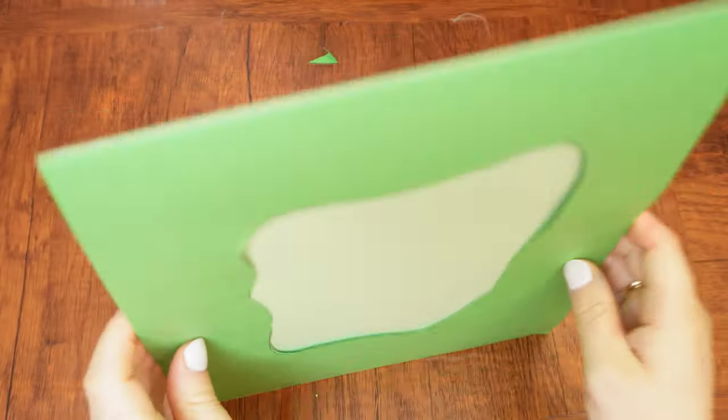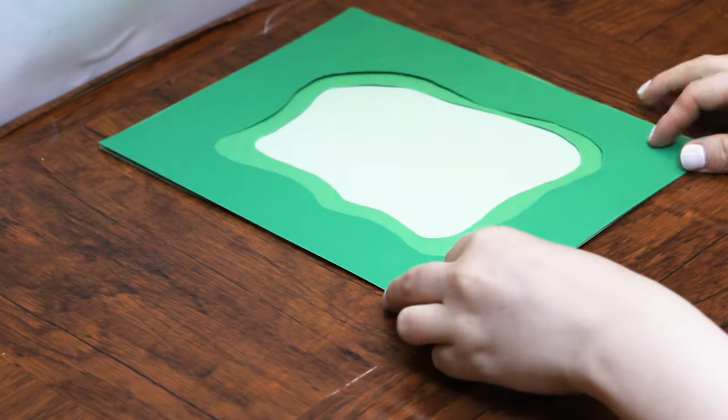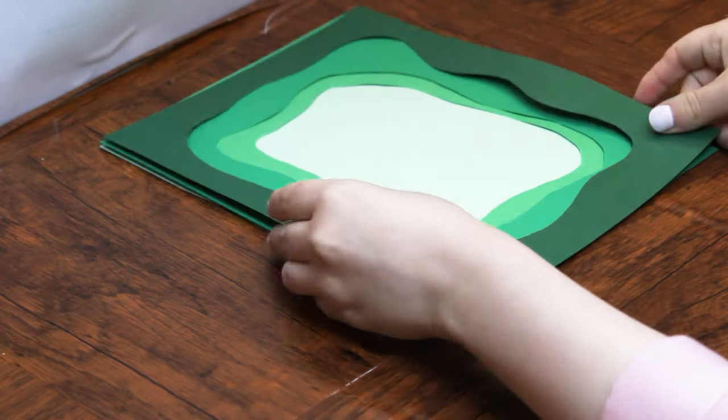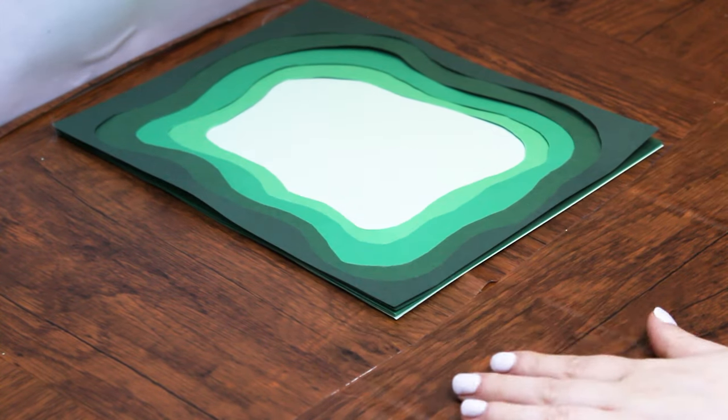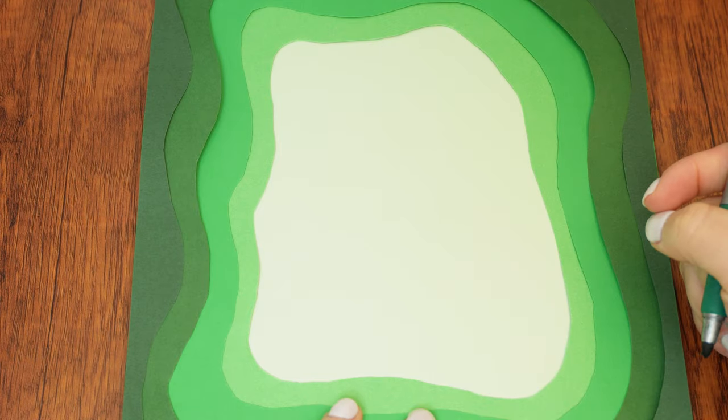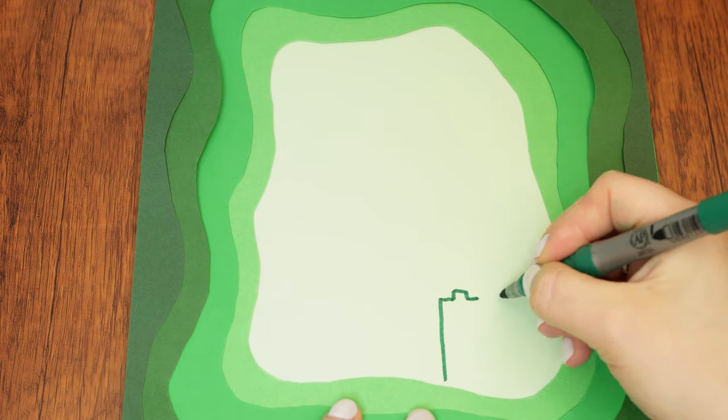Next, lay the cutouts from lightest to darkest on the background which will be our lightest piece of cardstock. At this point, choose whether you'd like to print the cityscape onto the background or if you'd like to draw it on. If you choose to draw it, use a dark green marker to create buildings and houses then add windows and a shining sun.